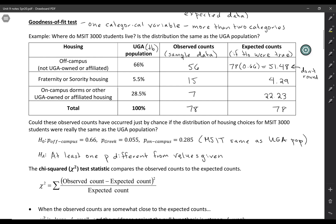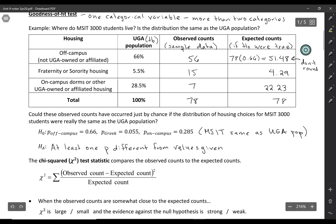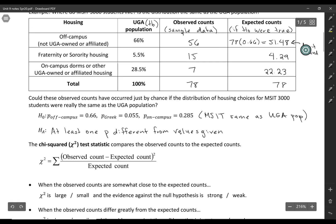Alright, so before we just sort of looked at comparing the observed and the expected counts, but sometimes it's not always easy to measure how far the observed are from the expected. So that's where the chi-squared statistic comes in. So the purpose is just to compare the observed and the expected counts. Okay, so let's do that.